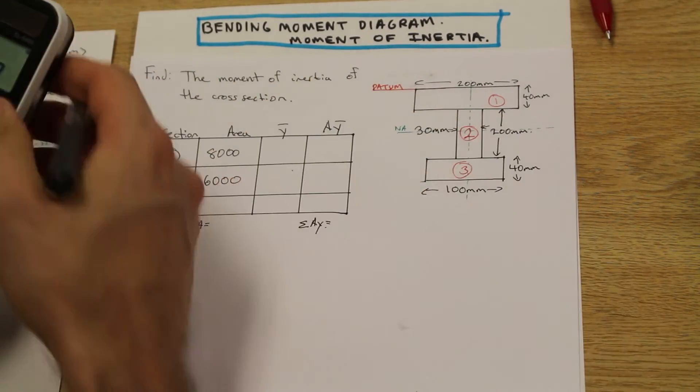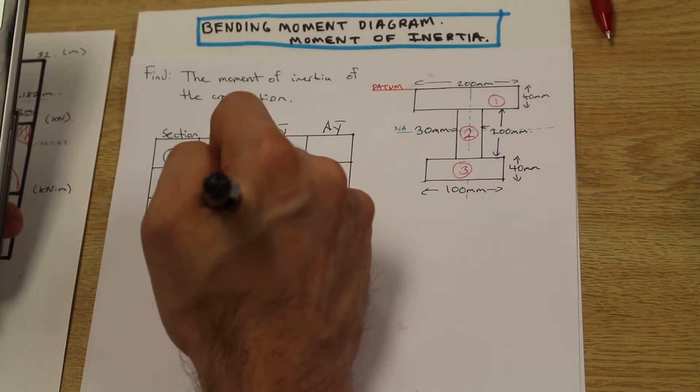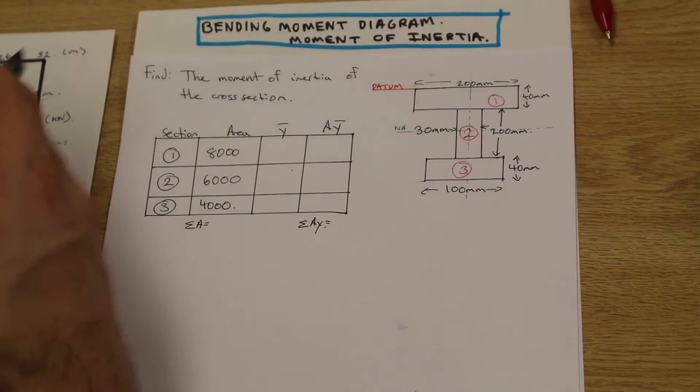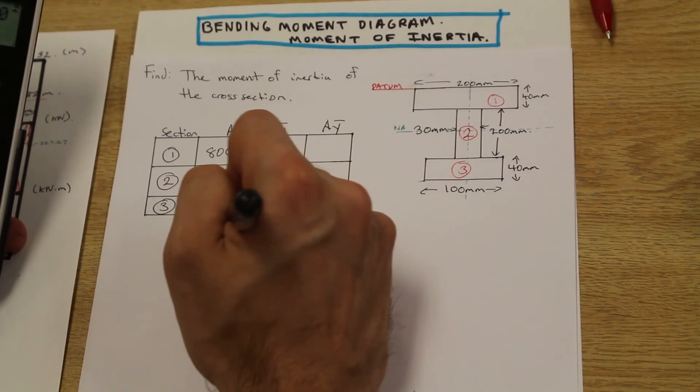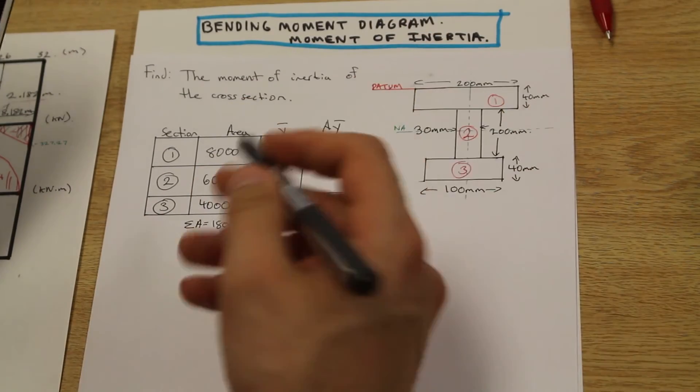For the third block, we have a 40 by 100 millimeter section, and the summation of all the areas is 18,000. That's what we're going to need to find our Y bar.